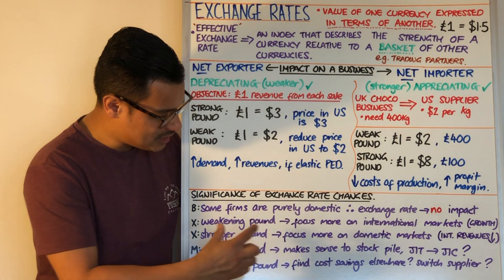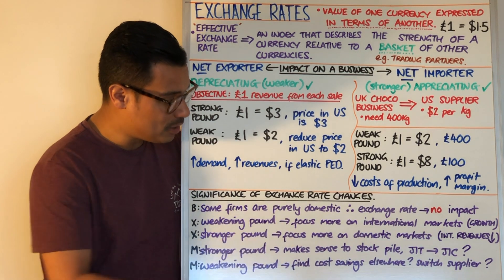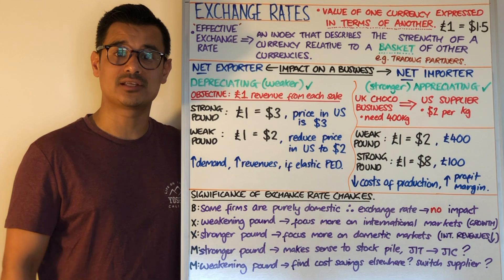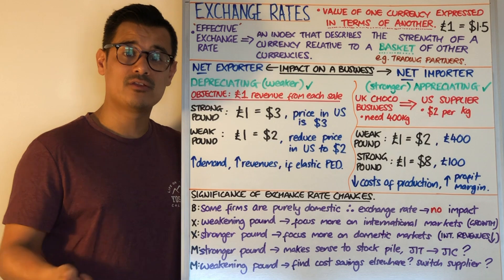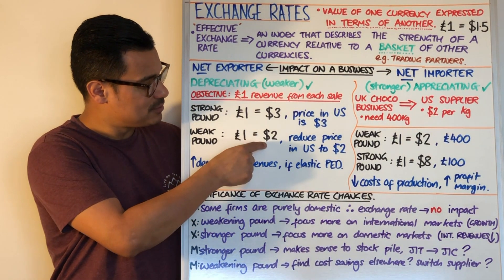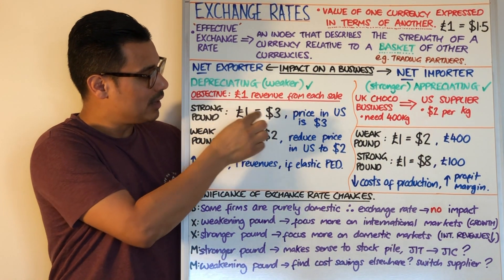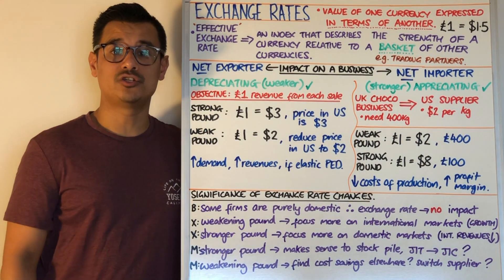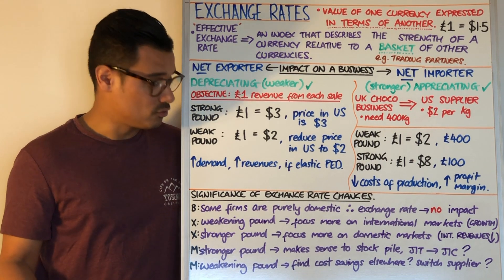On the flip side, if you're an exporter and the pound is getting stronger, you might instead focus on domestic home markets, because you now appear relatively more expensive in those foreign international markets. For example, if one pound was worth two dollars and a strengthening pound takes it to three dollars, you'd have to increase your price, which could have a damaging impact on your sales and revenue.